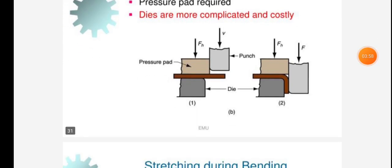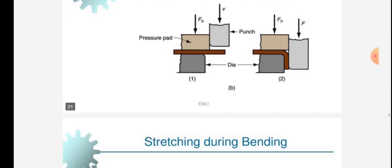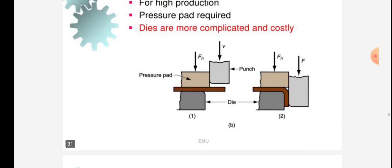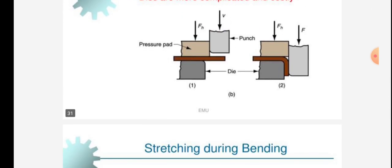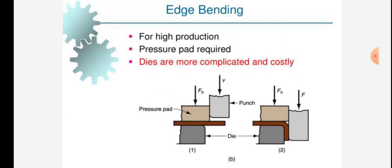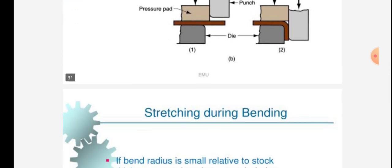Dies are more complicated and costly. Pressure pad is given, Fn force is given, velocity is given for the punch, die is given. Figure V shows the bending of the die edge.